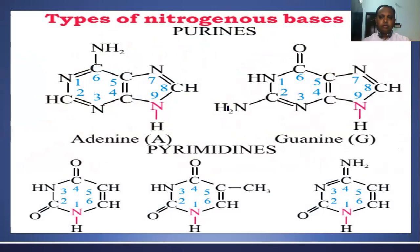The DNA nucleotide contains deoxyribose sugar, whereas RNA nucleotide contains ribose sugar — that is the main difference. Each nucleotide present in DNA as well as RNA has three important components: one nitrogen base, one pentose sugar, and one phosphate group.